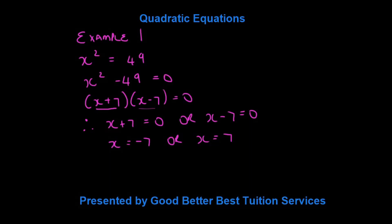And then what we have is two linear equations, and we say if x plus 7 is equal to 0, then x is equal to negative 7, and we can say that if x minus 7 is equal to 0, x is equal to 7. That gives us the two values we need for our quadratic equation.